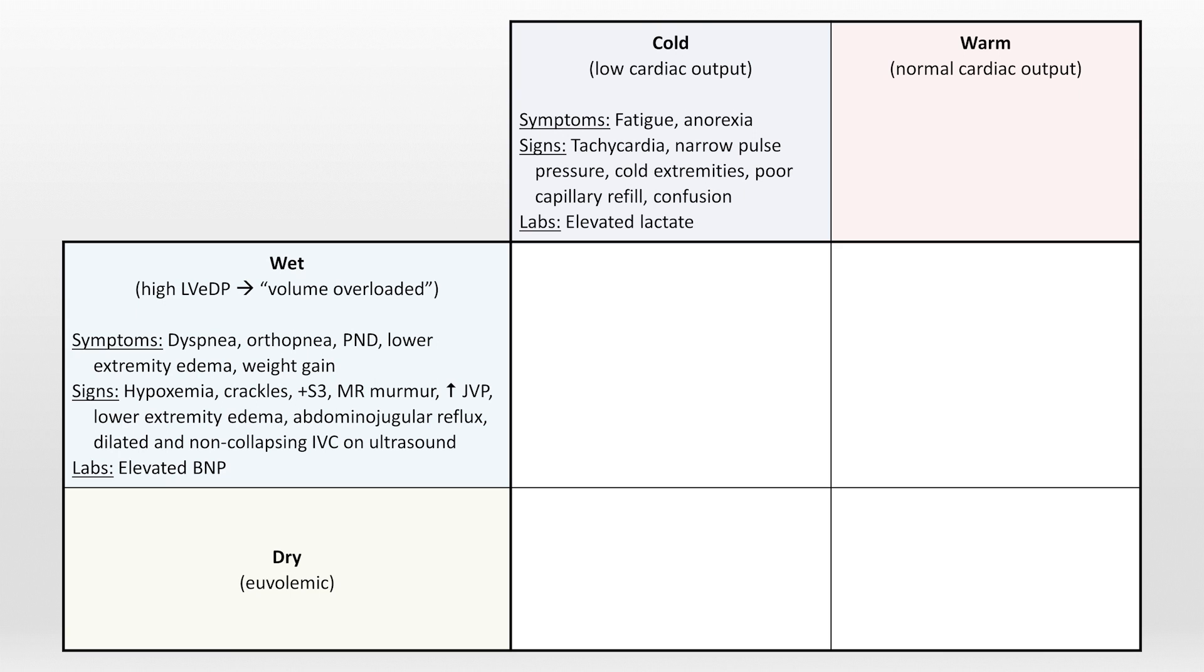From this 2x2 table, we have four possible states a patient with heart failure can be in. If they are warm and dry, they are well compensated and hopefully asymptomatic. The most common phenotype among patients with acute decompensated heart failure is warm and wet, meaning volume overloaded with normal or near normal cardiac output. Cold and wet patients are next most common, and cold and dry is the least common. These categories are very helpful in understanding approaches to treatment.